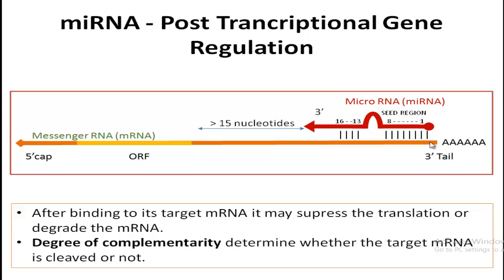Now we are going to discuss micro RNA and post-transcriptional gene regulation. A typical messenger RNA structure has a 5' cap and 5' untranslated region, the yellow ORF which is the protein-coding part of the mature messenger RNA, and the 3' non-translated region. The micro RNA, shown in red, comes and binds with the 3' UTR region, stopping protein synthesis by this messenger RNA. The region in which the micro RNA binds into the messenger RNA is called the authentic target.